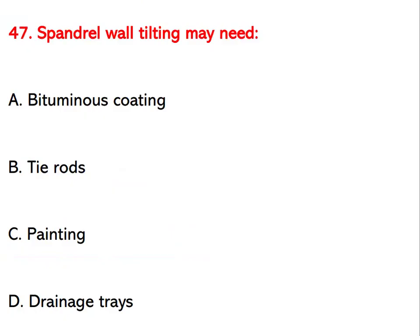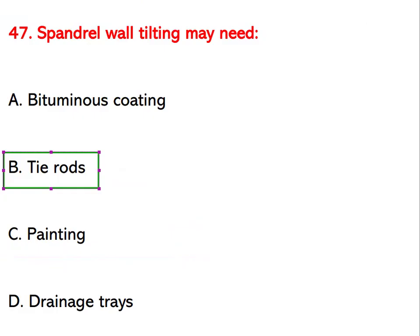A spandrel wall tilting may need which corrective measure? Options are bituminous coating, tie rods, painting, or drainage trees. The right answer is tie rods.